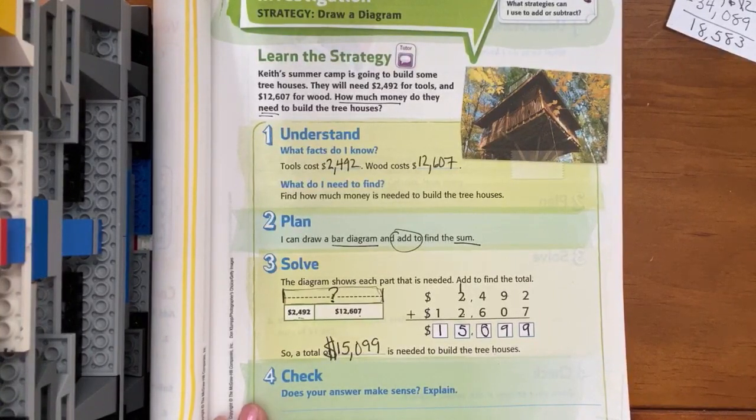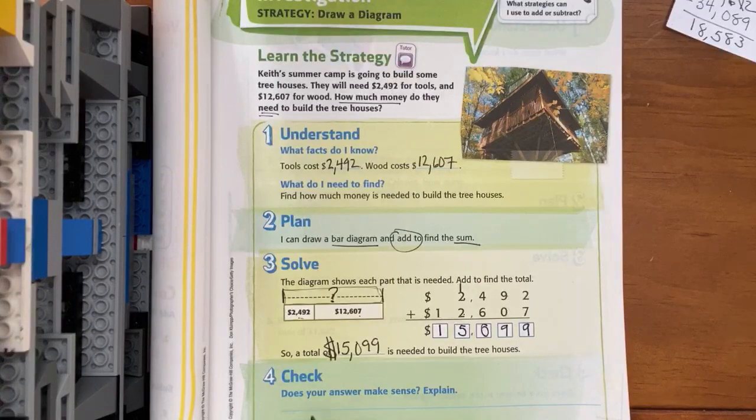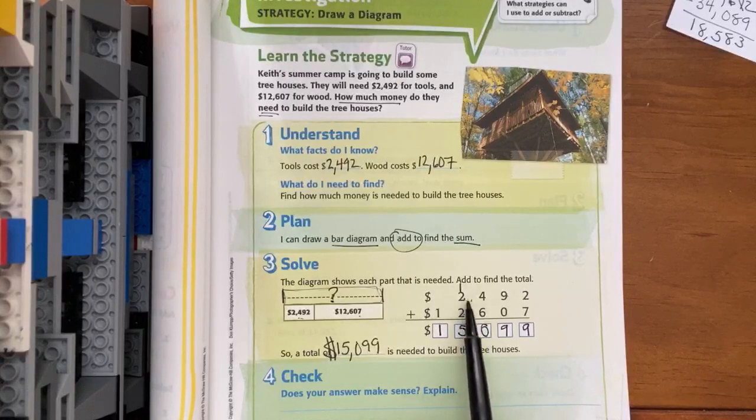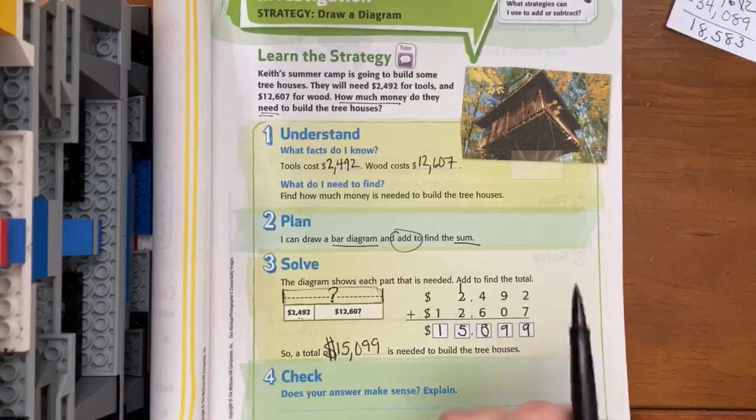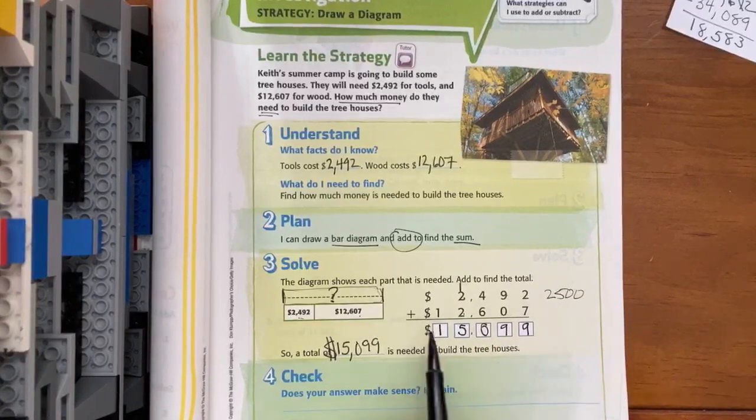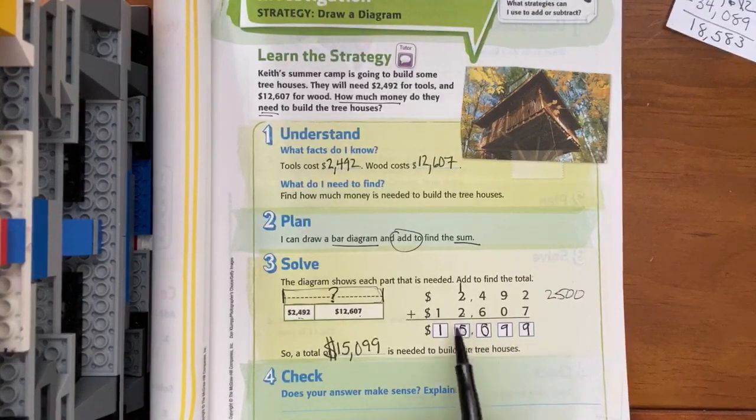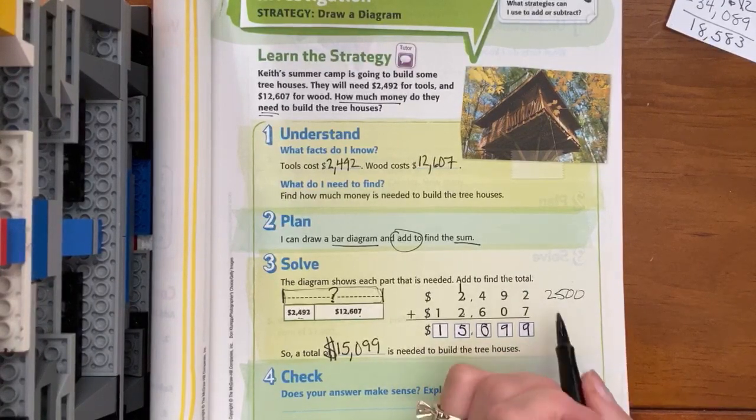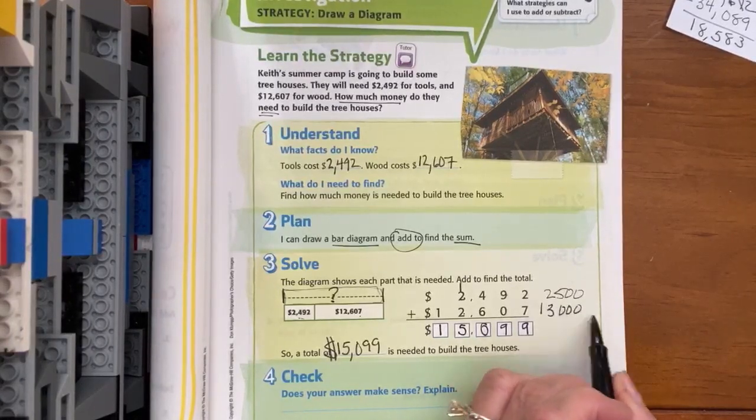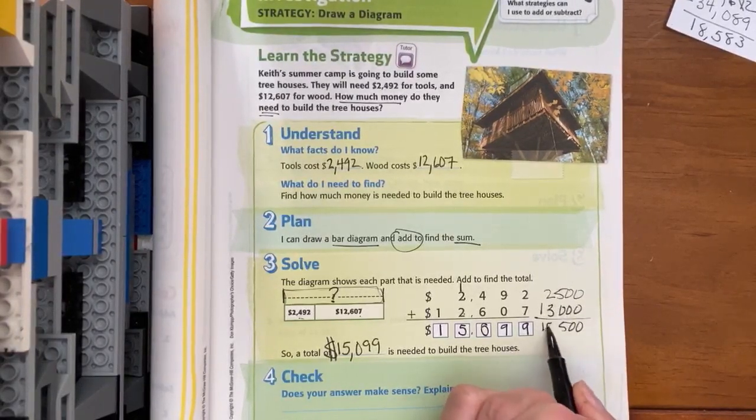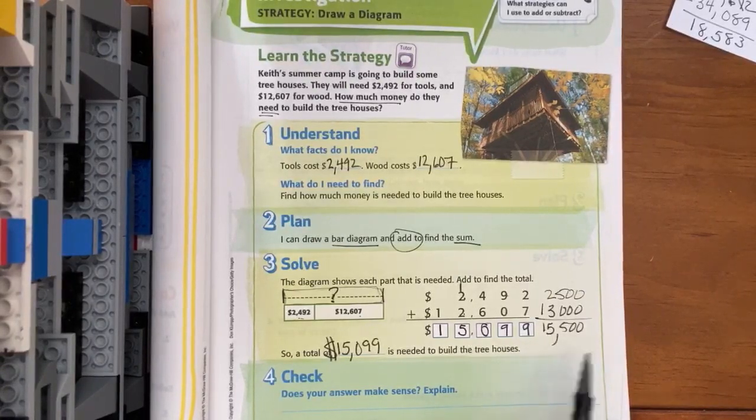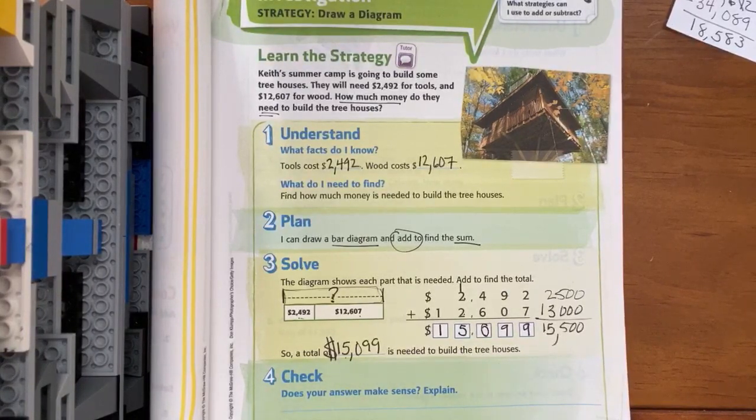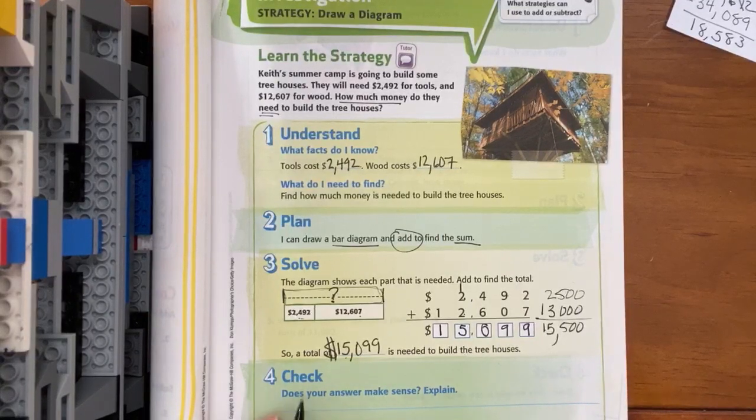Then check: does our answer make sense? We can look and say, well, $2,492 is almost $2,500, and we can say that $12,607 is between $12,000 and $13,000. So we could round up to $13,000, and we could estimate. When we estimate, we get about $15,500, so we're close. We're within range. Our answer was $15,099, so then we would write my answer makes sense because...